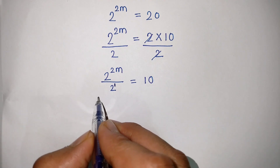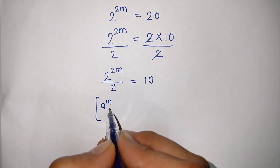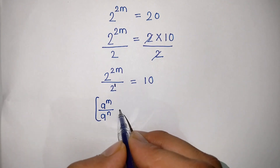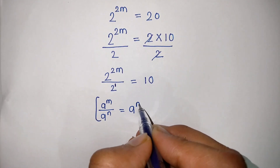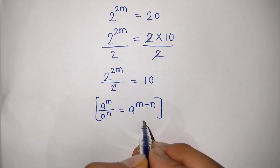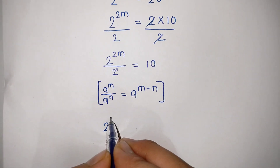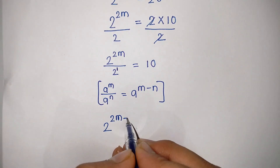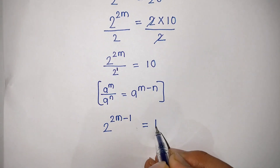Now we know the exponential rule that is a to the power m divided by a to the power n is equal to a to the power m minus n. By applying this rule we can write 2 to the power 2m minus 1 is equal to 10.